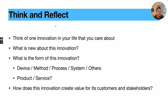To end this first part, I want you to think and reflect. Think about one innovation in your life that you care about. Ask yourself: What is new about this innovation? What is its form — is it a device, a method, a process, a system, a product, a service, or something else? And most importantly for design for adoption: how does this innovation create value for its customers and stakeholders? This is the question we'll explore in the next two parts. If we figure out how to create value for our customers and stakeholders, our innovation has a better chance of getting adopted. I'll see you in part two.